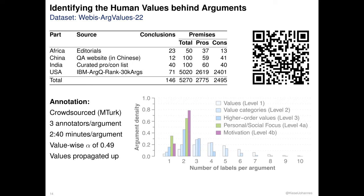We used crowdsourcing to annotate all 5,270 arguments. In a two-step process, we hired US annotators for the task. Every argument was independently annotated by three annotators for all 54 level 1 values, and annotations were fused into a single coherent ground truth. Annotators needed nearly three minutes per argument on average and reached a value-wise Krippendorff's kappa of 0.49. Values were then propagated to upper levels of the taxonomy. Real-world arguments can and usually do resort to several values.